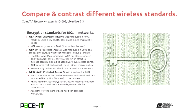Now let's talk about encryption standards for 802.11 networks. First is Wired Equivalent Privacy, WEP, introduced in 1999. It uses a key and the RC4 algorithm to encrypt the signal. However, WEP was fully broken in 2001 — a hacker can break into a WEP-encrypted network in just a couple of minutes. Do not use WEP. It's better than nothing, but do not use it.